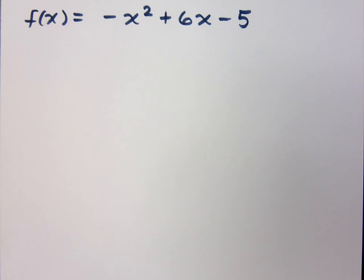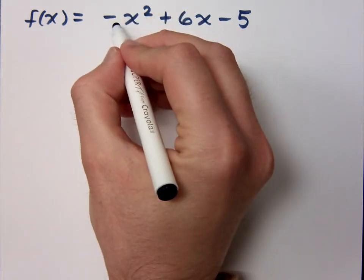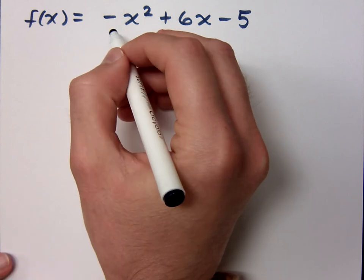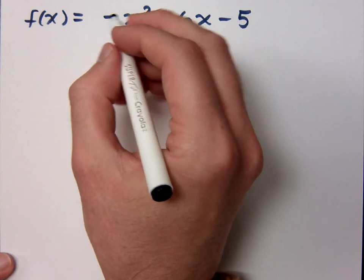Now we can take this guy and do completing the square on this. I want to show you again so you have another example of this. Is this guy a positive 1? No, but can you make it positive 1? Yeah.